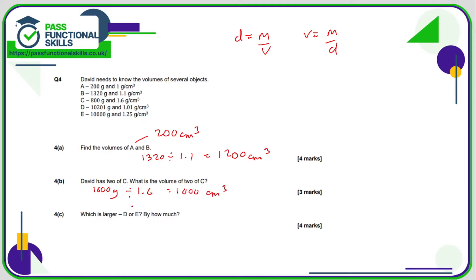Which is larger, D or E, and by how much? We just divide the mass by the density. 10,201 divided by 1.01 gives 10,100. Doing the same for E gives 8,000. So D is larger, and if we subtract 8,000 from 10,100, we get a difference of 2,100 cubic centimetres.